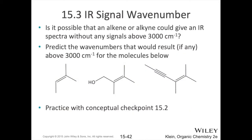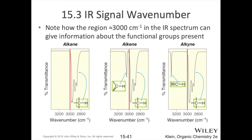An important note: it's not the carbon itself but a carbon attached to a hydrogen that gives rise to these peaks. So you need a hydrogen attached to that carbon. For example, a terminal alkyne will show a peak above 3000, but if your alkyne is an internal alkyne with no hydrogens attached to those sp carbons, you won't see this peak.